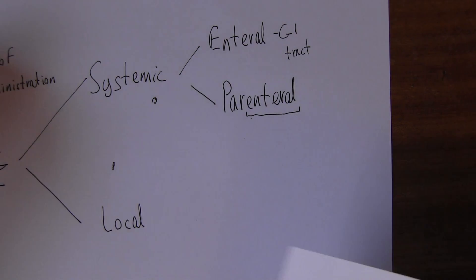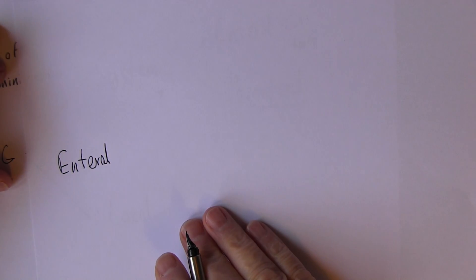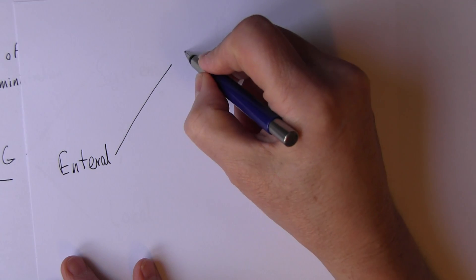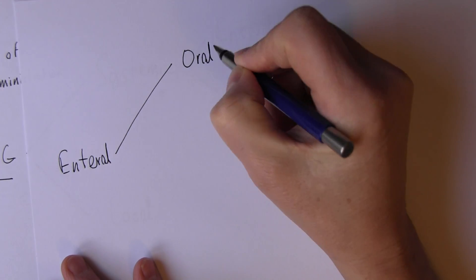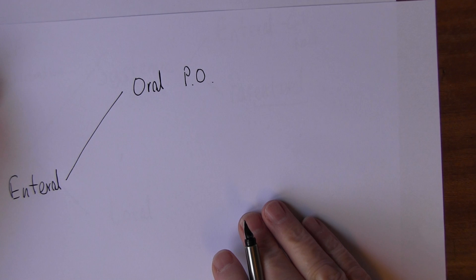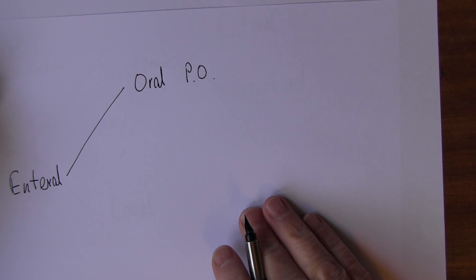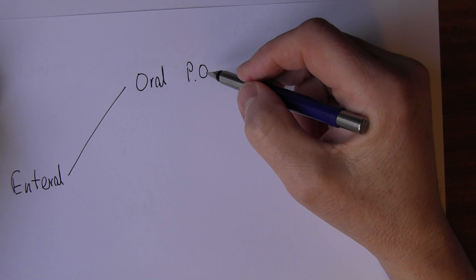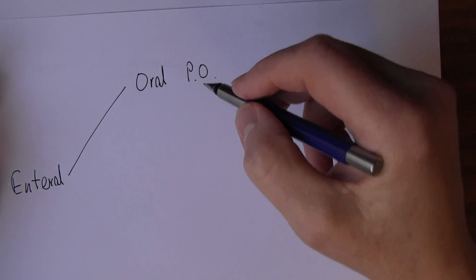Let's start with enteral — giving drugs via the gastrointestinal tract. The most obvious way is oral: we can just give a drug orally and the patient will swallow it, sometimes called PO, per oral route of drug administration. Typically the drug will be absorbed through the stomach and the duodenum once it's been swallowed.